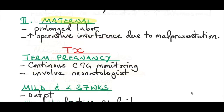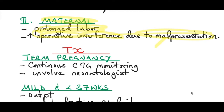Maternal complications of oligohydramnios include prolonged and painful labor, as amniotic fluid normally lubricates the fetus as it descends, making birth shorter and less painful. There is also increased operative interference due to malpresentation, especially breech, requiring maneuvers to help deliver the fetus.